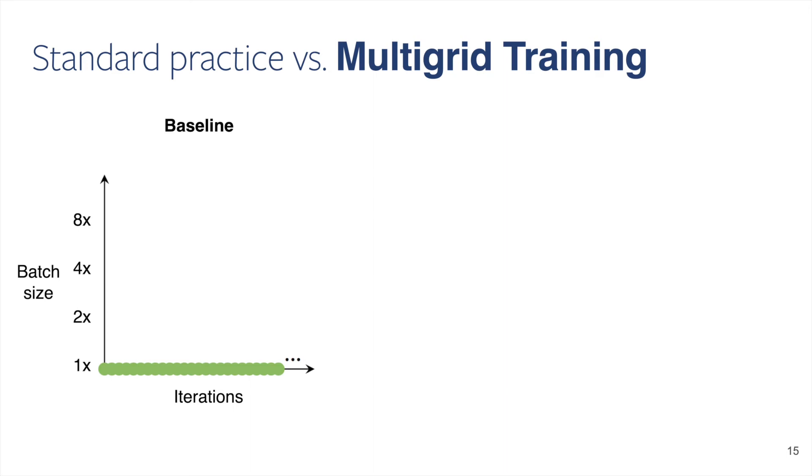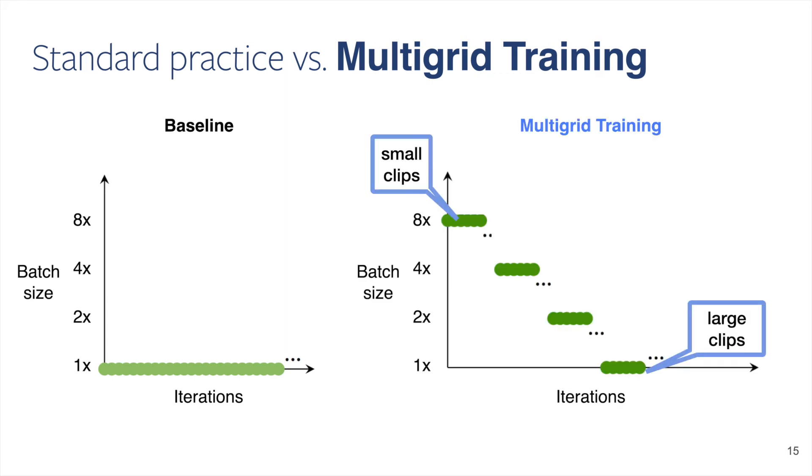Here we compare our multigrid training with the standard practice in terms of their batch sizes. The baseline method uses a fixed batch size during training. Multigrid training, on the other hand, uses a larger batch size when it trains on a smaller clip. Note that the effect of this simple change could be large. In this example, the average batch size is almost four times larger, meaning that training can process a fixed number of epochs almost four times faster.